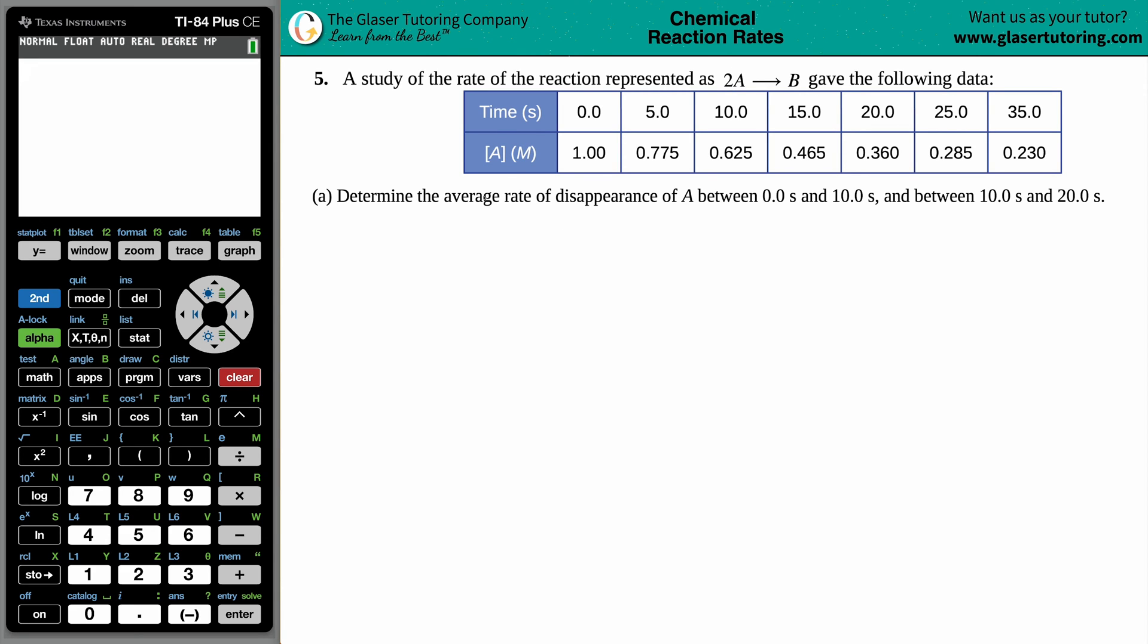Part A says: determine the average rate of disappearance of A between 0.0 and 10.0 seconds, and between 10.0 and 20.0 seconds. So we just need to find a rate value.